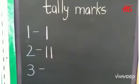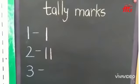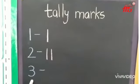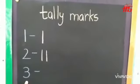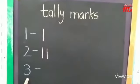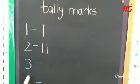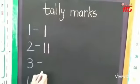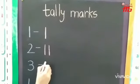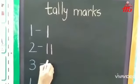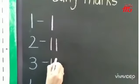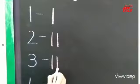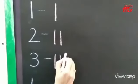Now after 2, which number comes? Number 3. Now for number 3, how many lines are we going to draw? One. Two. Three.